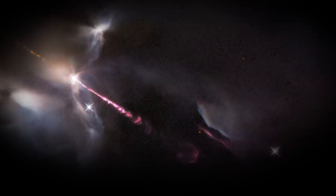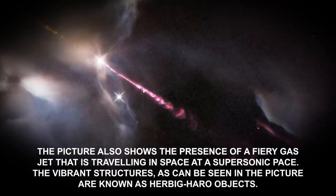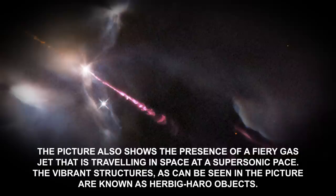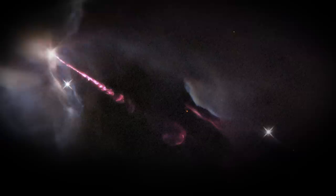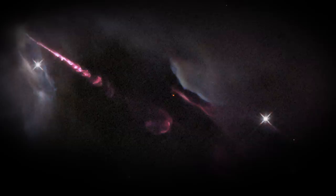Number 1: Outburst of an Infant Star in the Galaxy. This highly detailed image shows a highly energetic outburst from an infant star. The picture also shows the presence of a fiery gas jet that is traveling in space at a supersonic pace. The vibrant structures, as can be seen in the picture, are known as Herbig-Haro objects. Thanks to this image, astronomers will get a deeper insight into the presence of dusty envelopes that shroud the protostars, which are still in their early stages of formation.